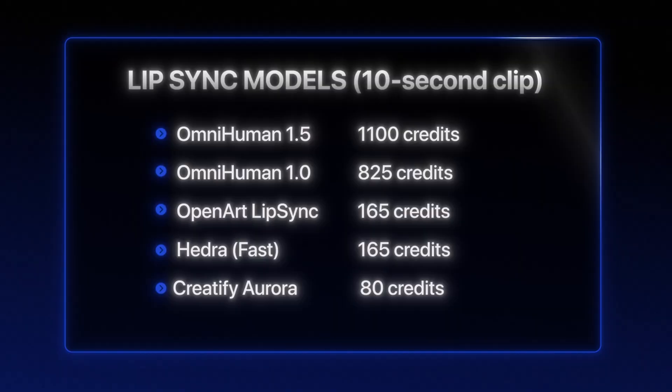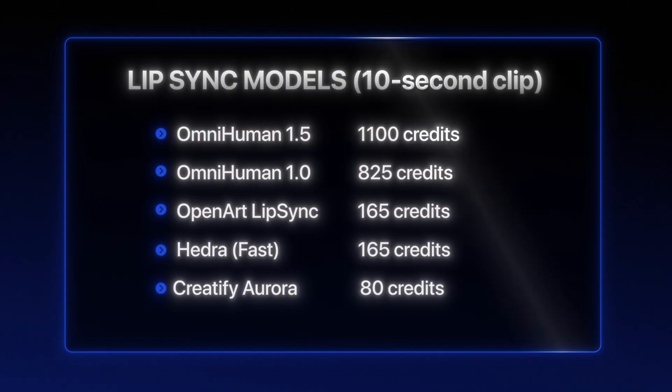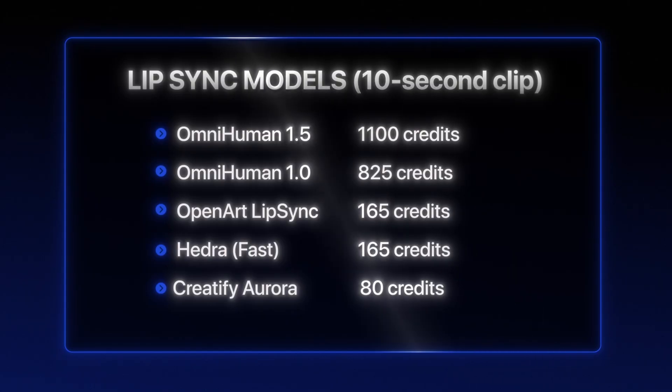If I have to pick one to build on, I'd start with OmniHuman 1.5 which has the most convincing result, but it does cost more credits. Here are the credit costs for the 10-second result for each model.